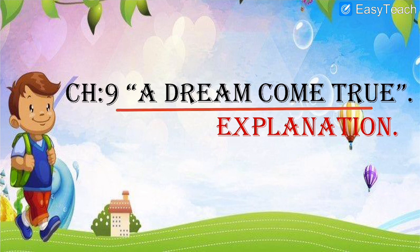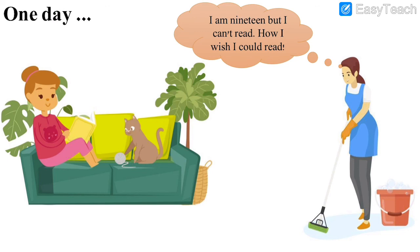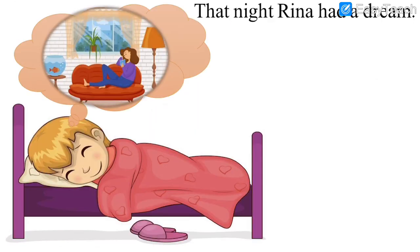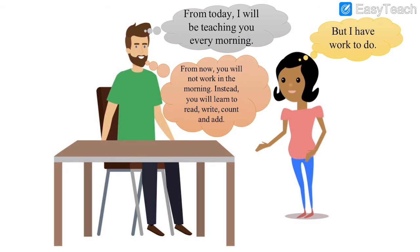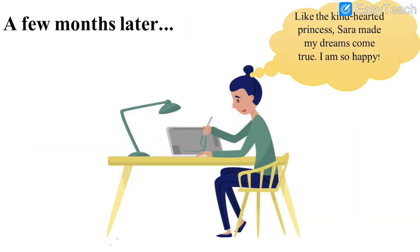The main thing we learned in today's video is lesson number 9, 'A Dream Come True.' It was about two girls, Reena and Sara — how Reena was working as a maid, was 19 years of age, and dreamed of reading and writing. Sara's father told her she would work half the day and learn to read and write the other half. That is how Sara made Reena's dream come true, and she was very, very happy. Thank you for watching the video. Have a nice day.